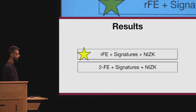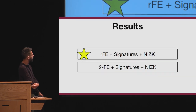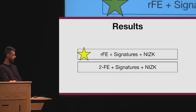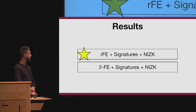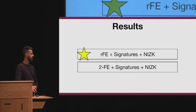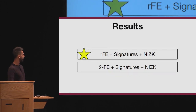From the construction point of view, we have two results. We are able to build matchmaking encryption from randomized functional encryption, a signature, and non-interactive zero knowledge. We have a second result where we replace the randomized functional encryption scheme with a two-input functional encryption — so we can trade the randomization of the function with a two-input function.